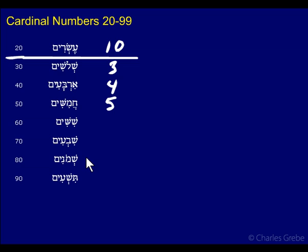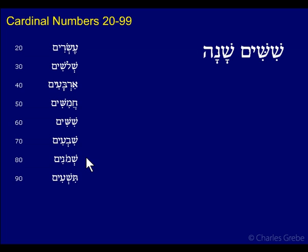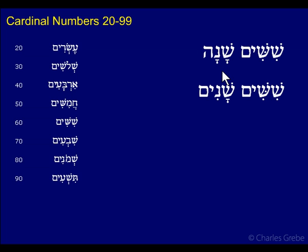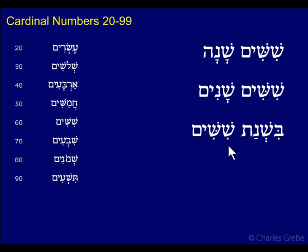Let's look at some examples. These numbers can modify either plurals or singulars, but usually singulars. For example: Shashim Shana — Shana is feminine, and Shashim Shana means '60 years,' using the singular. You can also say Shashim Shanim using the plural, but usually the singular is preferred with these larger numbers.